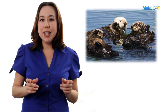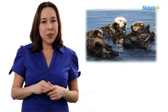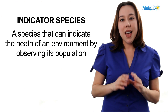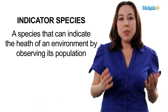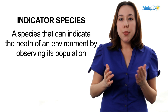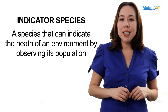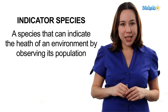Luckily, sea otters were brought back and the ecosystems off the coast of California are doing much better. Our next example is indicator species. An indicator species is a species that whether absent, present, or in relative abundance, tells scientists a little something about what's going on in the ecosystem.